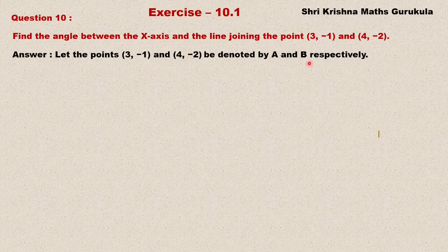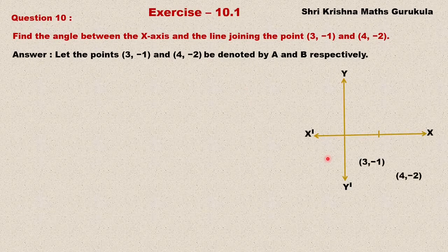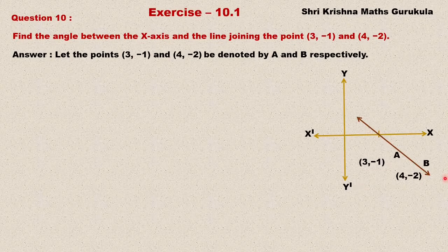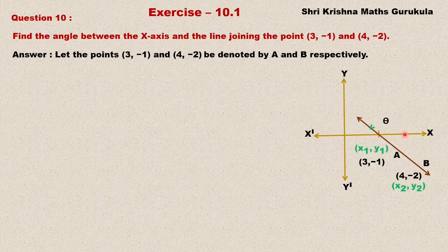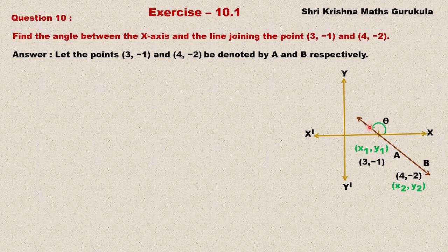We are naming the points as A and B respectively. Let us consider the rectangular coordinate system and mark the points (3, -1) and (4, -2). Join the line segments and extend that line so that it crosses the x-axis. You can see that this line makes two angles with the x-axis — one with the positive direction of x-axis, and another angle on the other side.